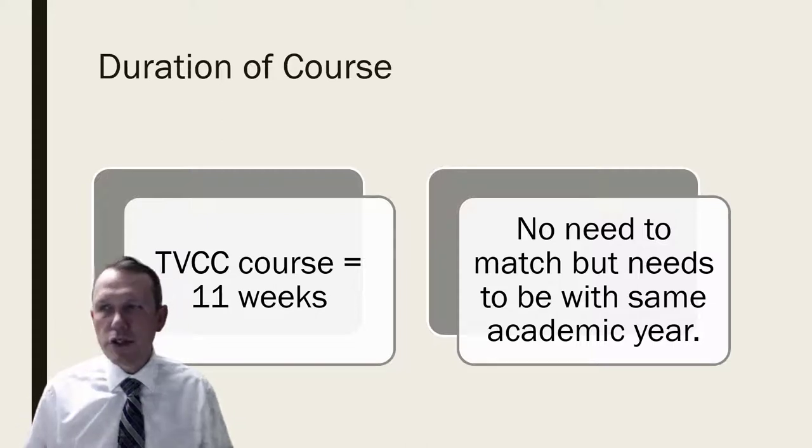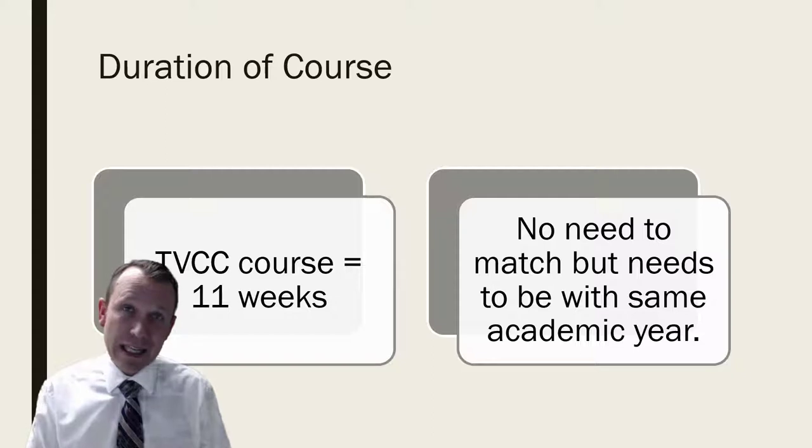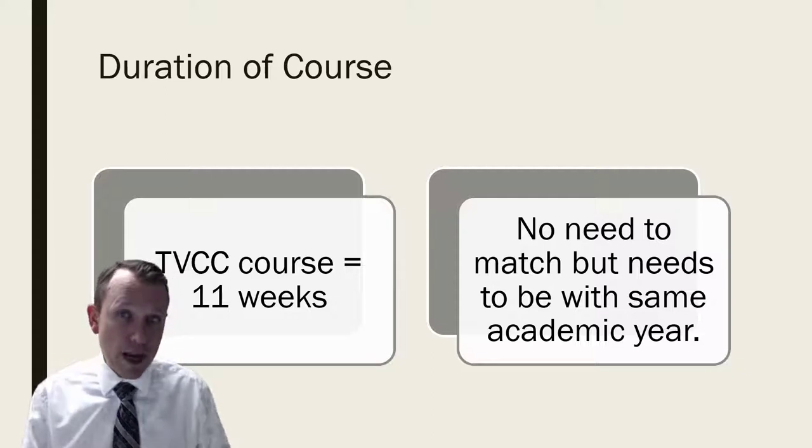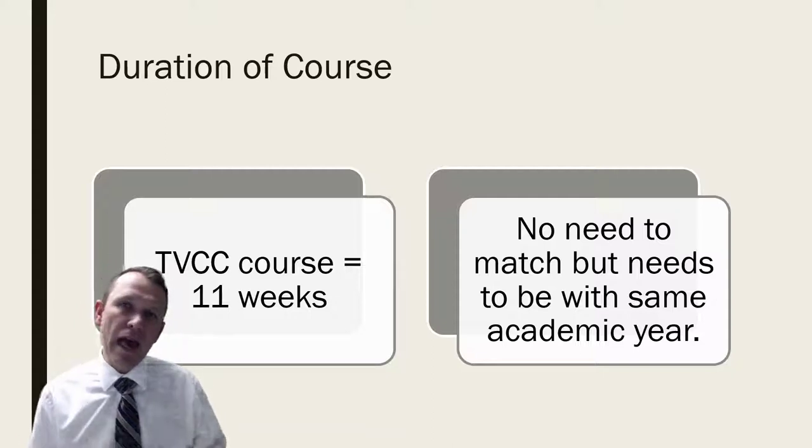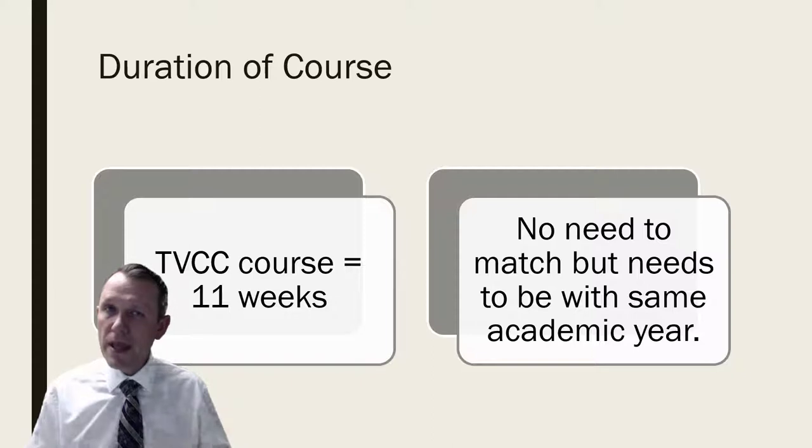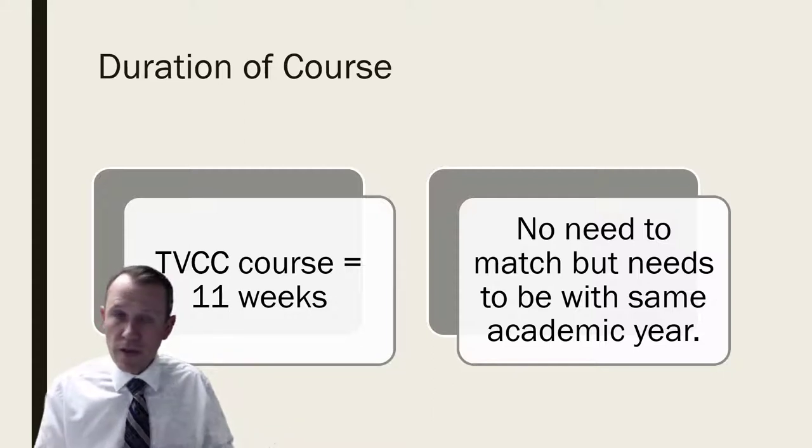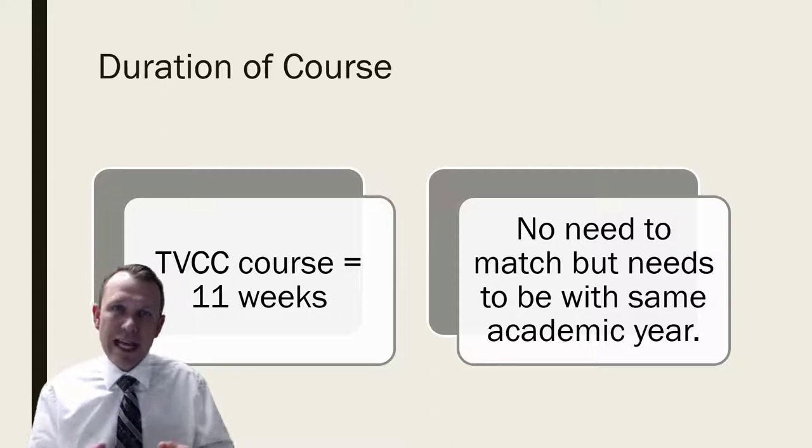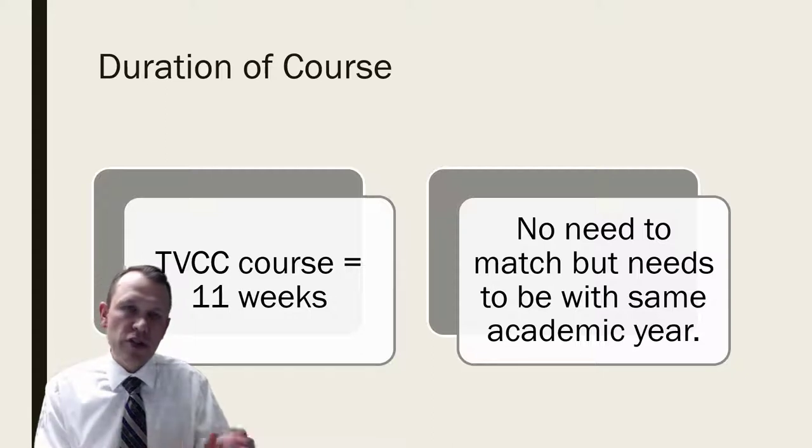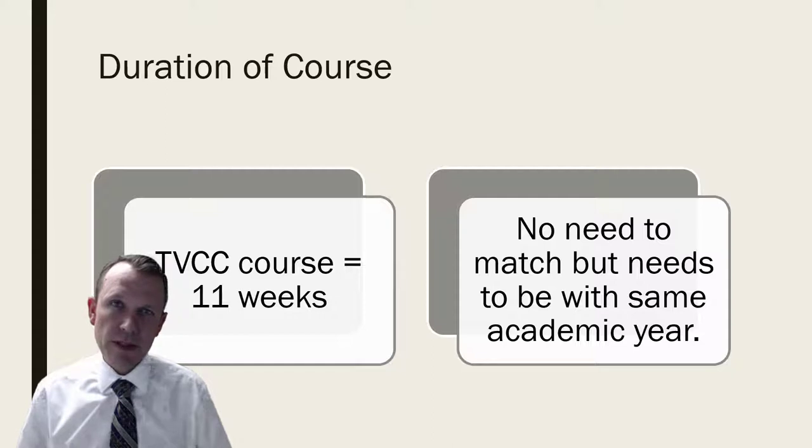Next, duration of the course. The duration of course for a TVCC course is going to be 11 weeks that includes final week - this is all done within 11 weeks and completed. For you in the high school you may have a different timeline for your course, it may be a year long course. One of the guidelines that I like to give is I like to have this done within the same academic year, so not necessarily to start it in one year and finish it another. That makes things easier to be able to build the plan that'll be our final project.